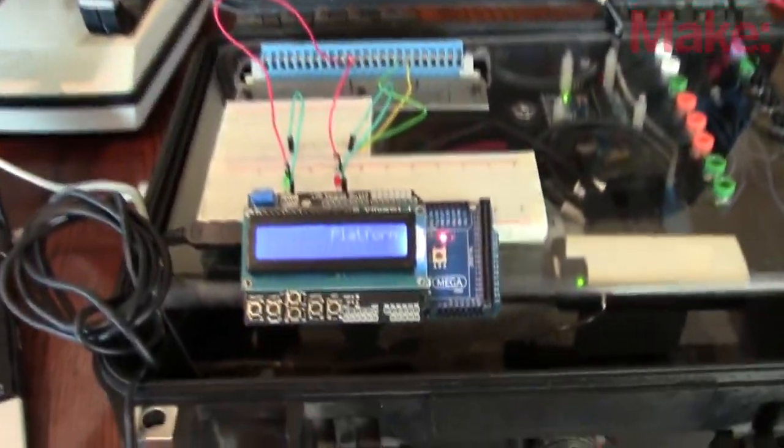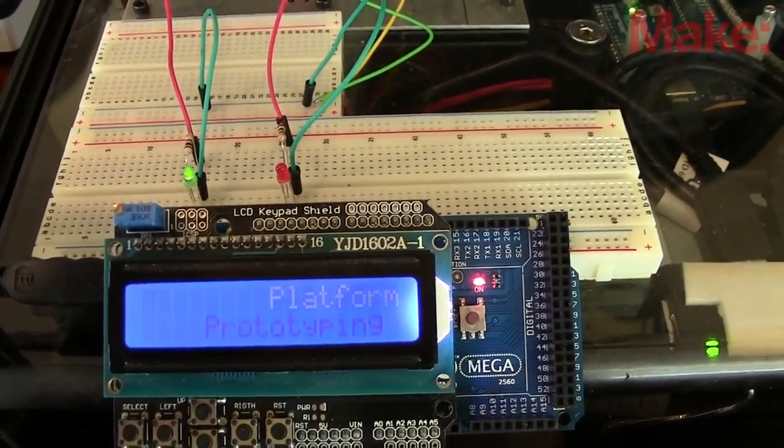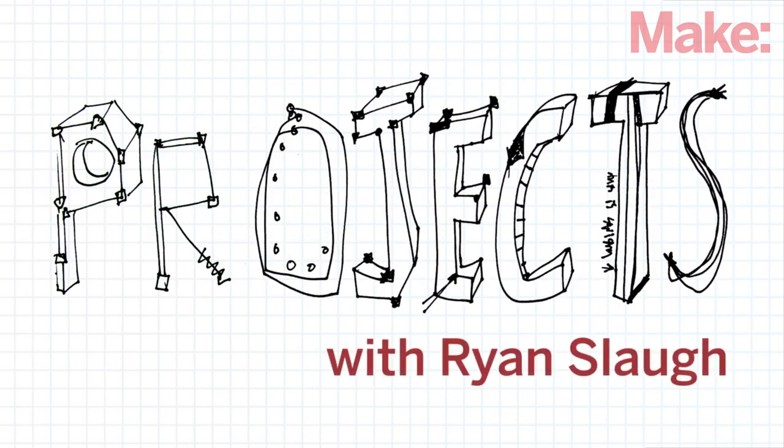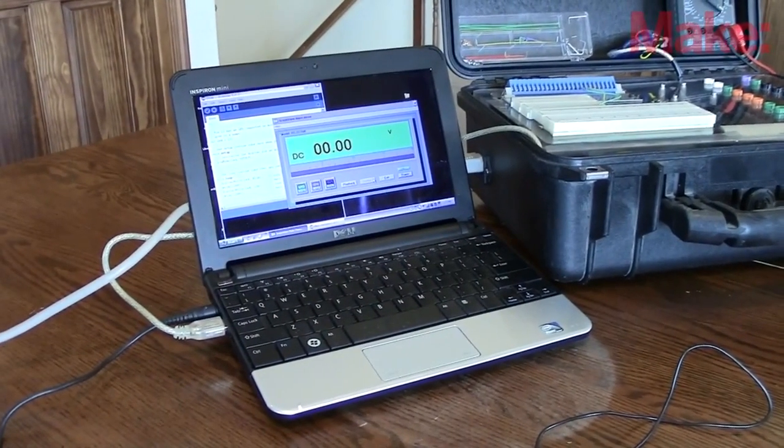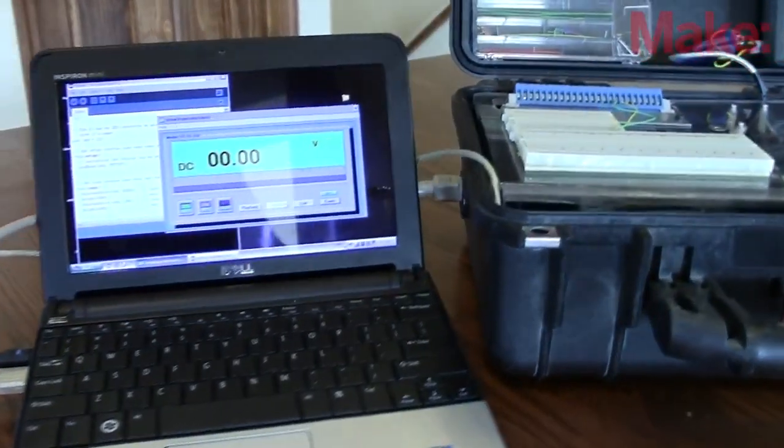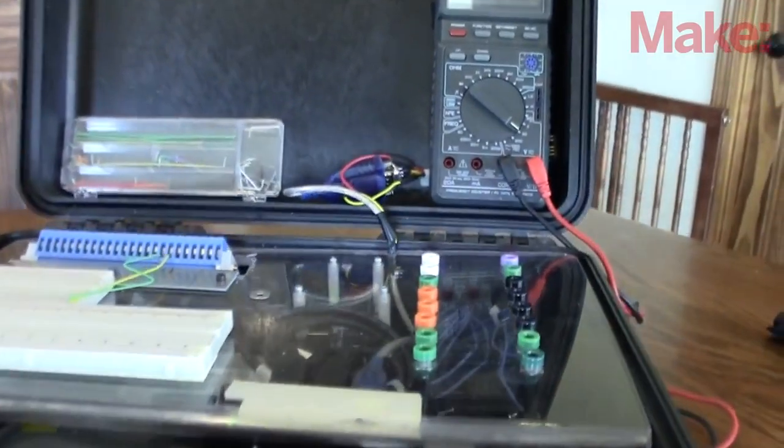This often happens to me, so I built the mobile prototyping platform, and I am going to show you how I did it. The mobile prototyping kit involves a Dell Mini-10V for control and data acquisition, and the hardware is housed in a Pelican case.